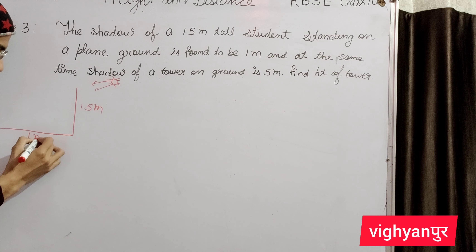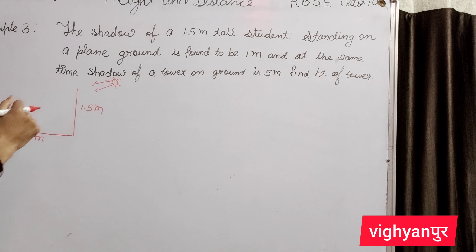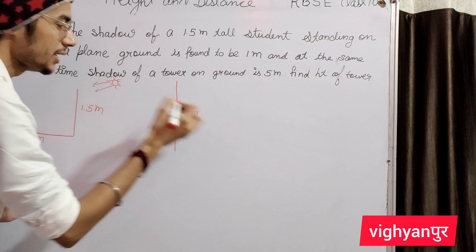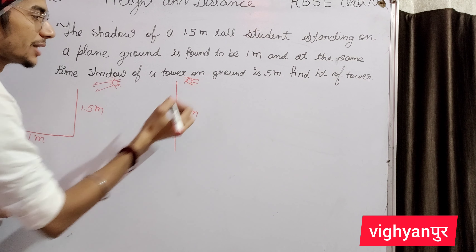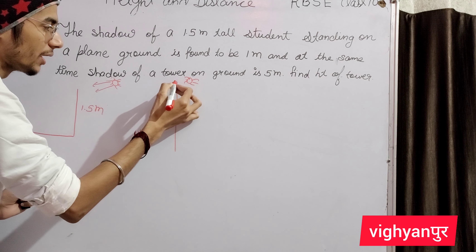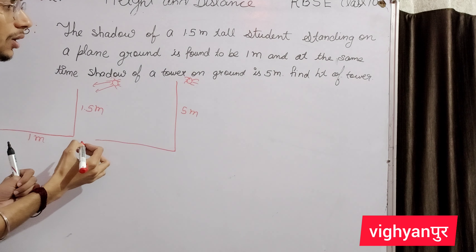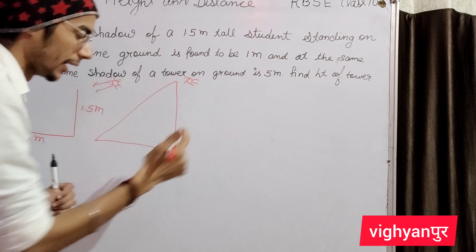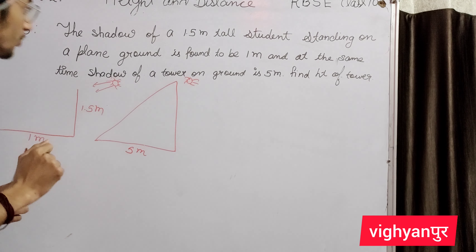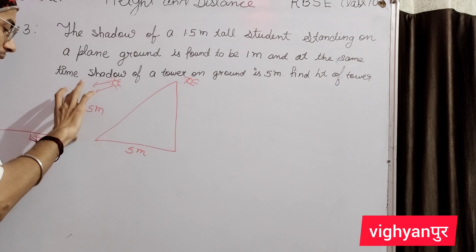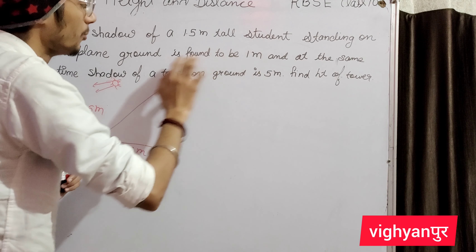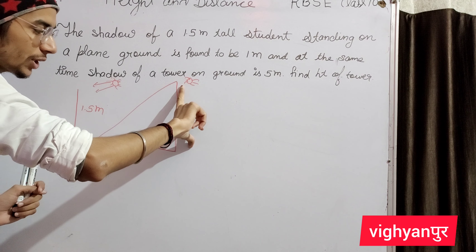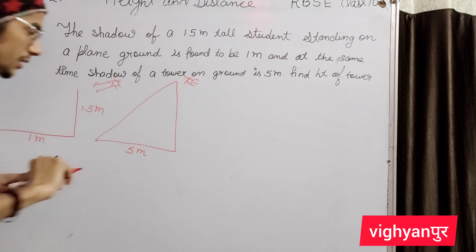This length is 1 meter. Now at the same time, the tower's shadow is 5 meters. So the tower is on this side and its shadow is 5 meters.